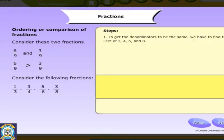Step 1. To get the denominators to be the same, we have to find the LCM of 3, 4, 6 and 8. For 3 and 6, it is 6. For 4 and 8, it is 8. So, find the LCM of 6 and 8.